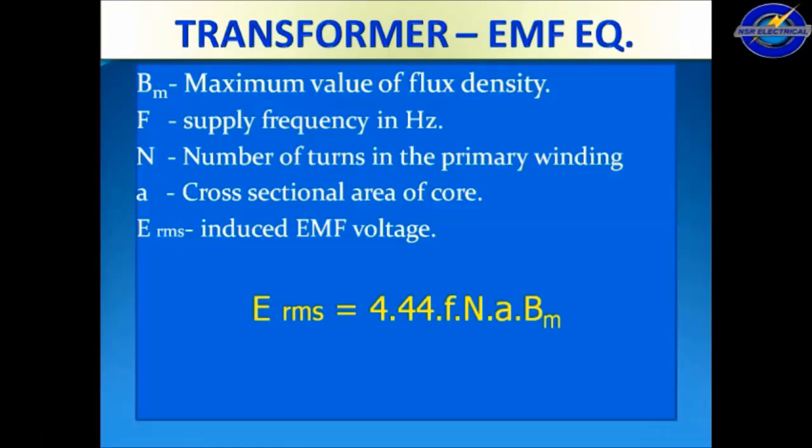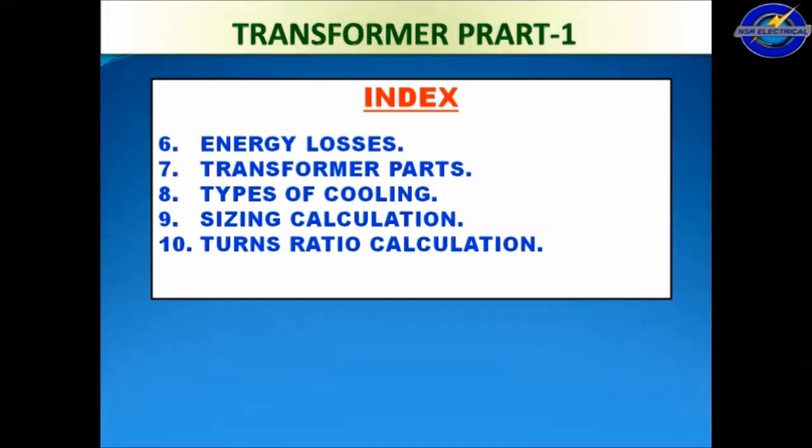The RMS EMF equation is: E = 4.44 × f × N × A × Bm. Here, E (RMS) is the induced EMF voltage, f is the supply frequency, N is the number of turns on the primary or secondary windings, A is the cross-sectional area of the core, and Bm is the maximum value of flux density.